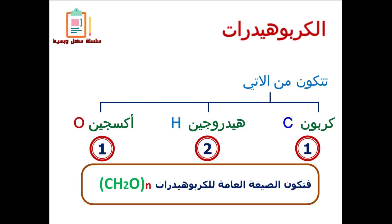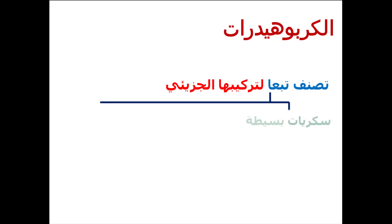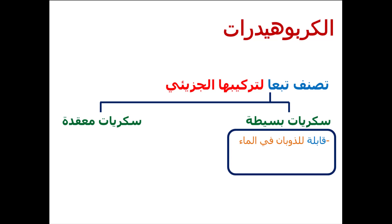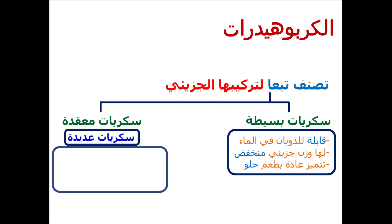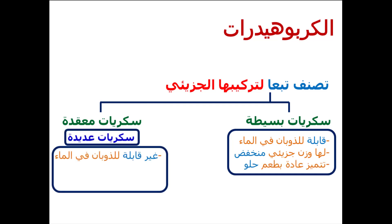الكربوهيدرات تنقسم تبعاً للتركيب الجزيئي إلى نوعين: إما سكريات بسيطة أو سكريات معقدة. السكريات البسيطة قابلة للذوبان في الماء، وزنها الجزيئي منخفض، وطعمها حلو. أما السكريات المعقدة فغير قابلة للذوبان في الماء، وزنها الجزيئي عالٍ، وليس لها طعم حلو.